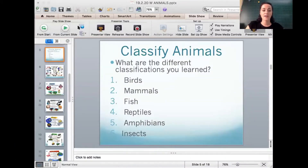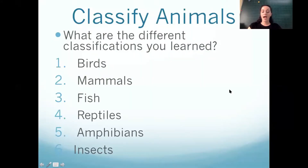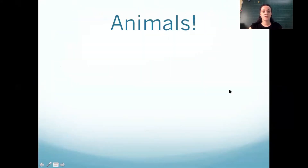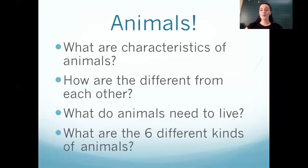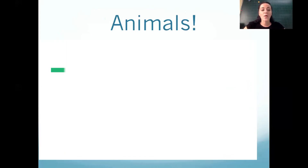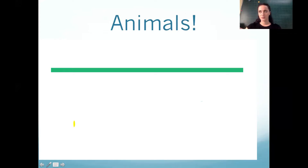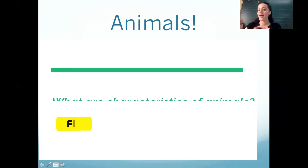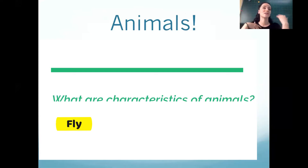The first thing we did was answer some questions about animals. So what are characteristics of animals? We said some can fly, some can swim, some have four legs, some have two legs.